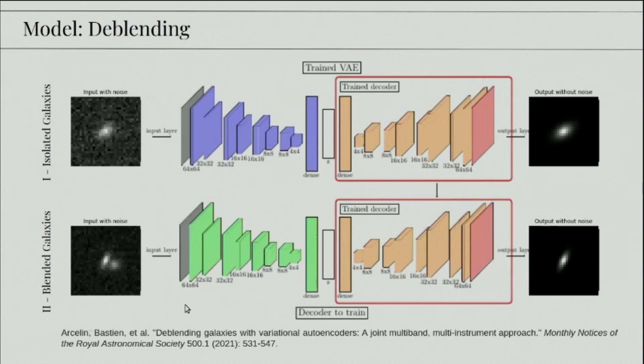Then the encoder of the blended galaxies learns to map its features to the bottleneck for the central galaxy, such that it would be the same point in latent space, or this bottleneck layer, as it would have been if it were a single galaxy. And hence, using the trained decoder, it's then reconstructed to be a single galaxy, hence deblending.